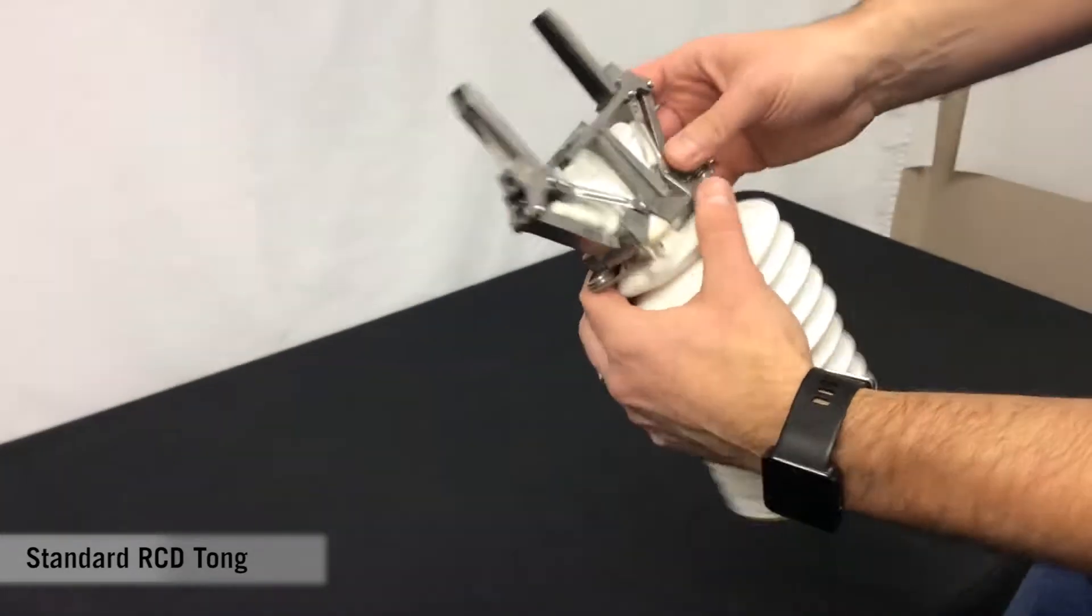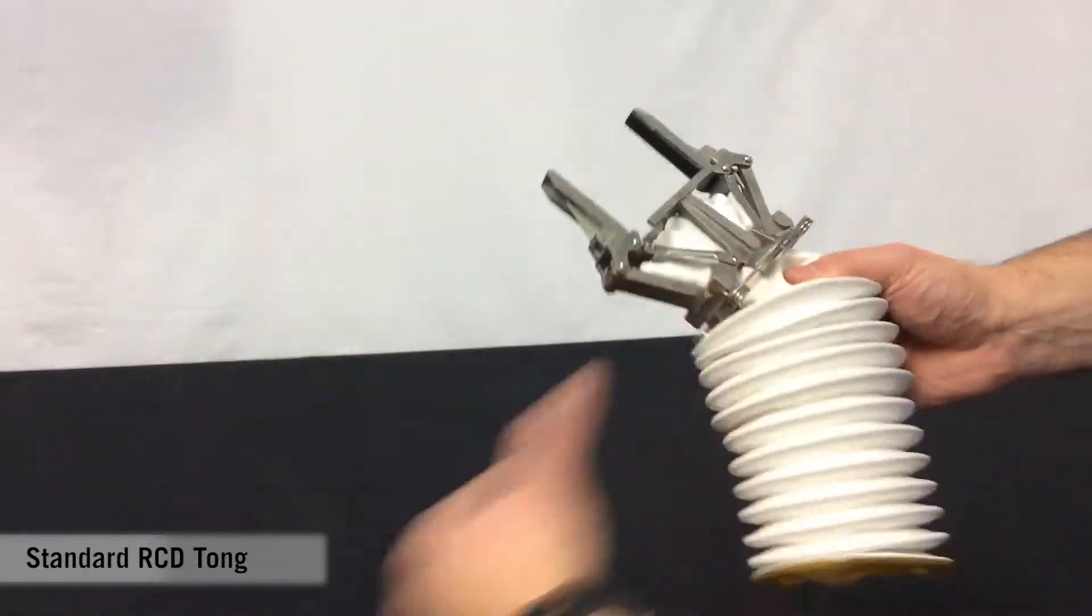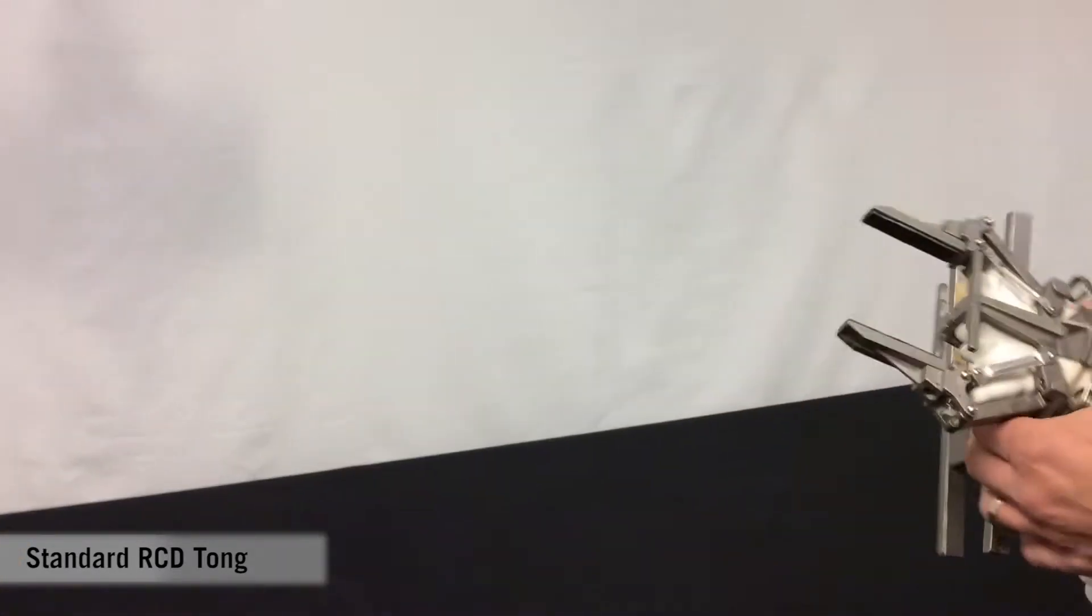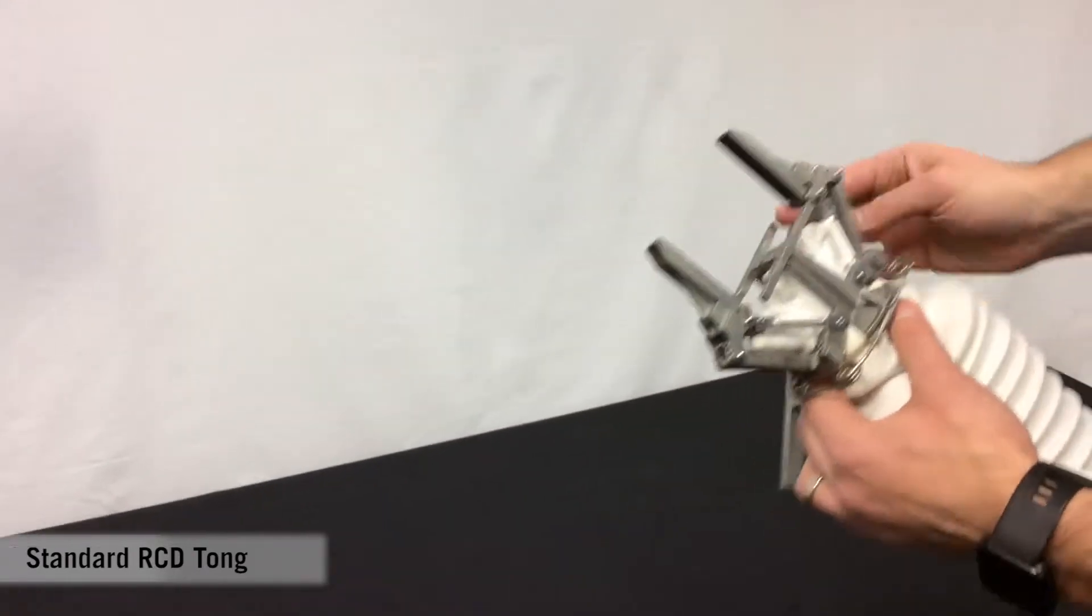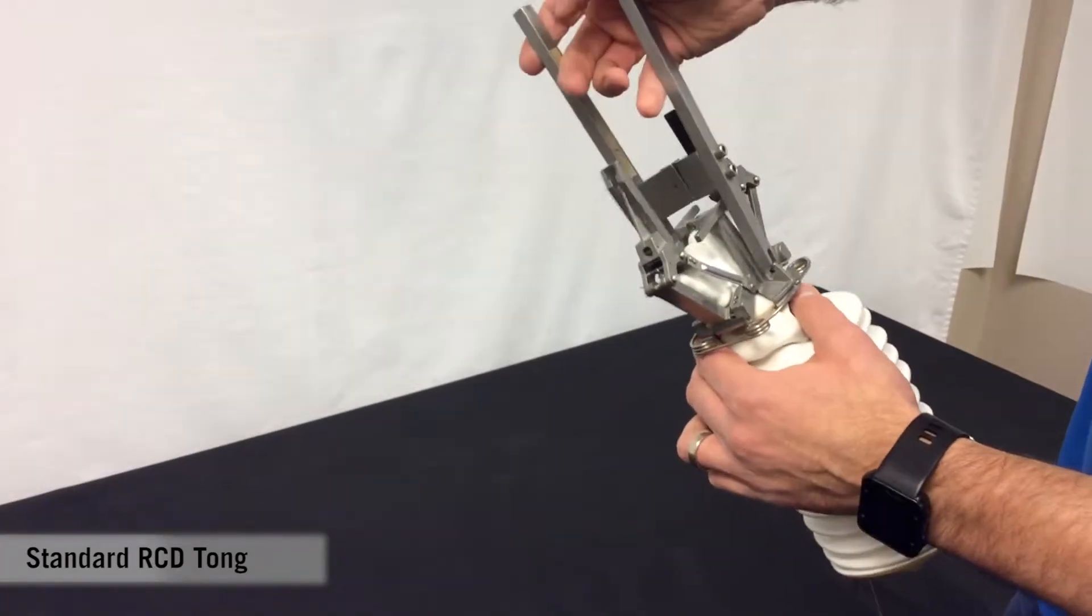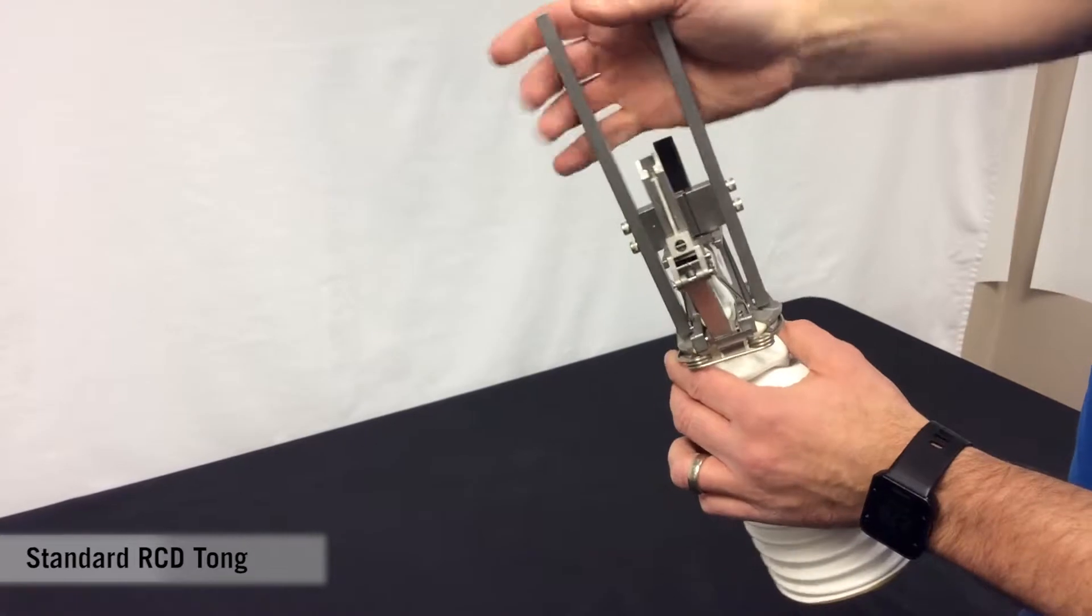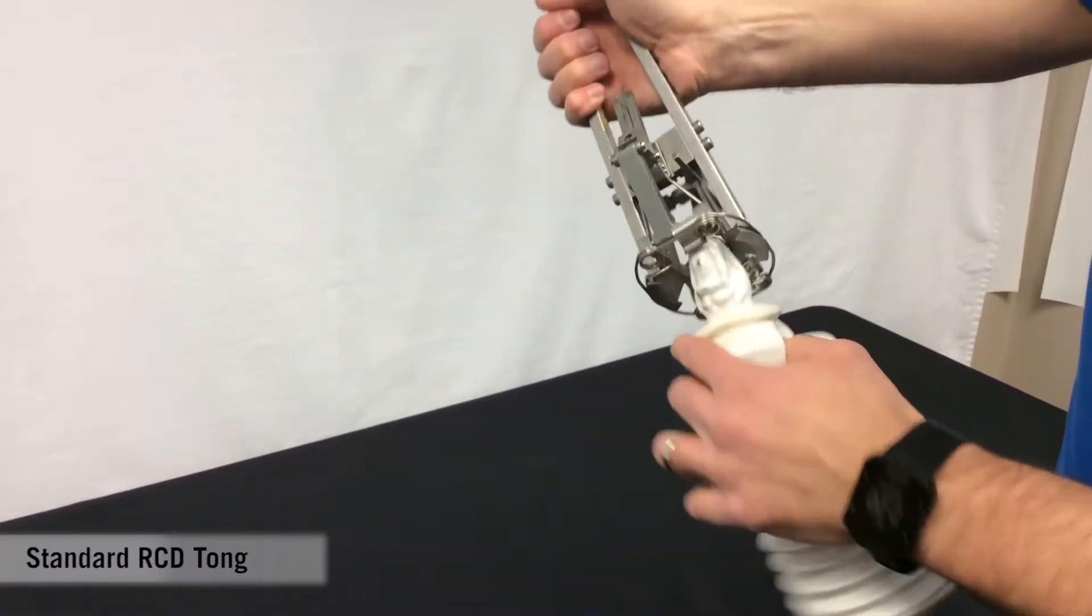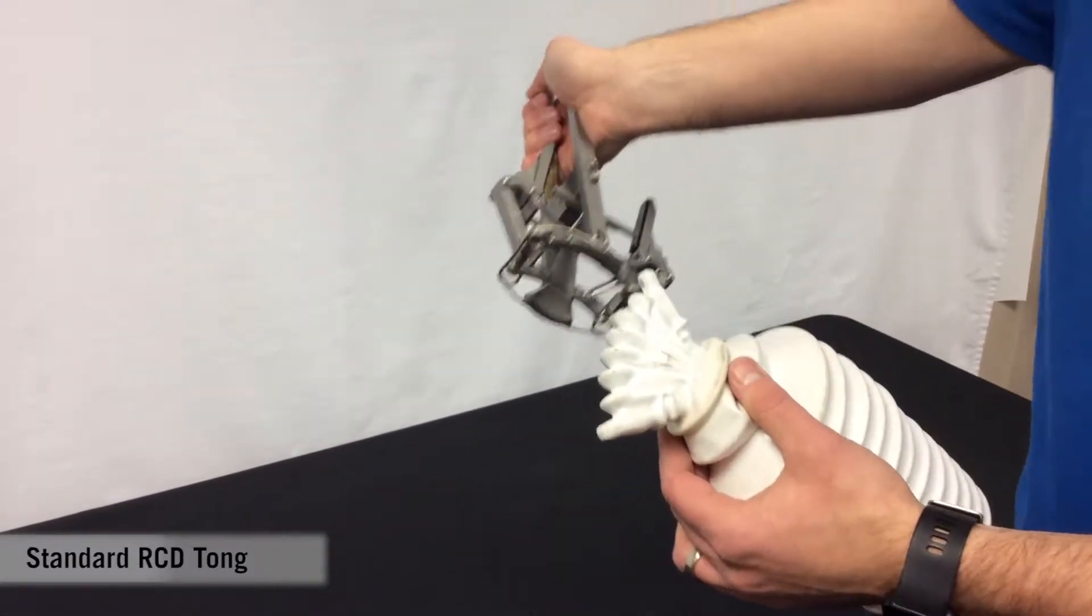This is an RCD tong, which means we can actually use it using either a tool by hand, or we also make docking stations that can be mounted in the hot cell. So this can pop right off.